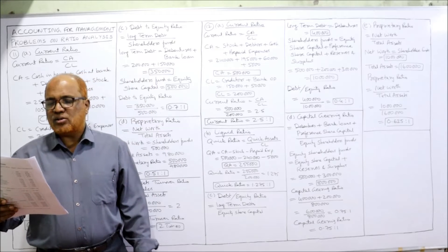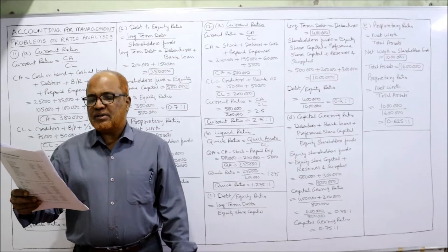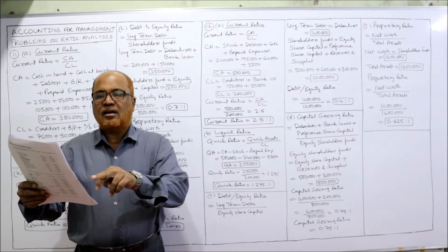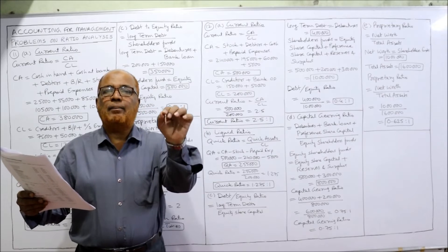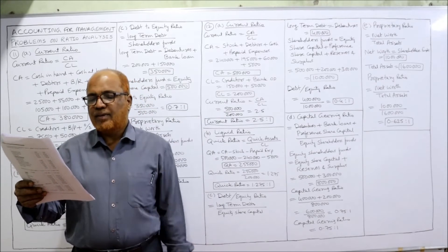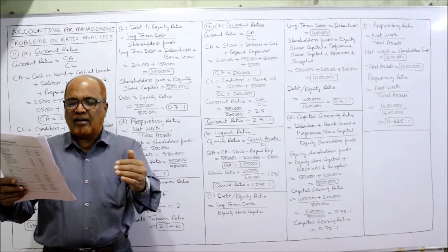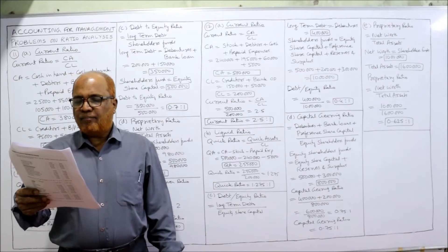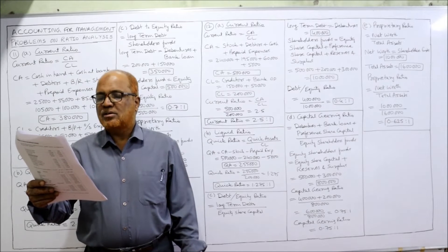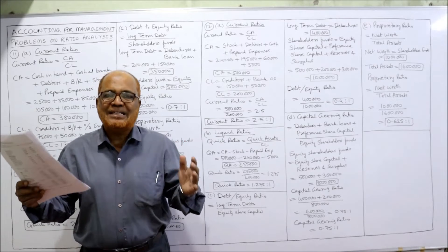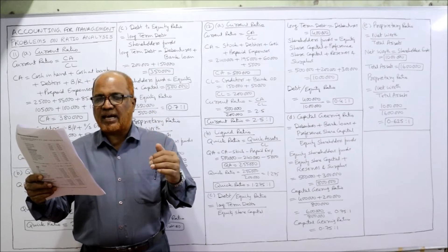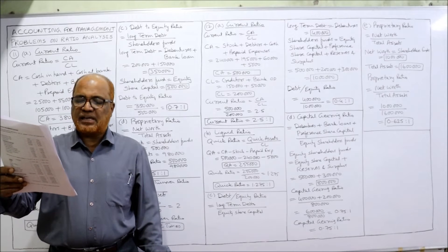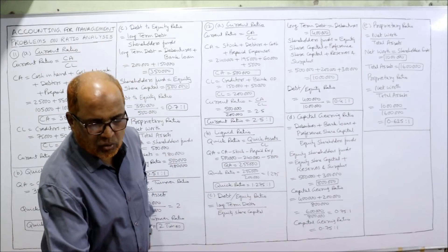Now 12th problem: balance sheet of Sharma Limited as on 31st December 2017. Liabilities: equity share capital, 10% preference share capital, reserves and surplus, debentures, sundry creditors, bank overdraft. Sundry creditors and bank overdraft are current liabilities; debentures are long-term debt; equity share capital, preference share capital and reserves and surplus combined are shareholders fund. Assets: land and building, plant and furniture — fixed assets; and stock in trade, debtors, cash in hand, prepaid expense — current assets. We calculate current ratio, liquid ratio, debt equity ratio, capital gearing ratio, and proprietary ratio.